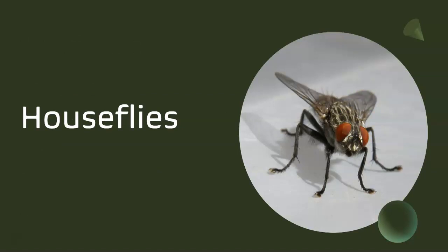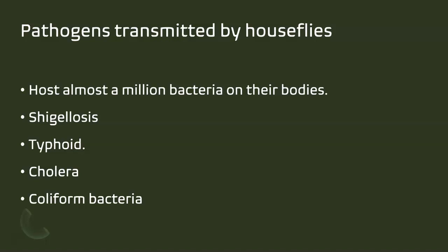The other vectors we discuss today are house flies. House flies are associated with dirt and carry almost a million bacteria on their bodies. Their main mode of transmission is that they constantly eat and regurgitate on food — they vomit and in doing so transmit bacteria onto food. They are responsible for transmission of pathogens associated with shigellosis, Salmonella, typhoid, cholera through Vibrio cholerae, and other coliform bacteria associated with fecal matter. Although they appear quite benign, house flies are a major vector for many pathogens.